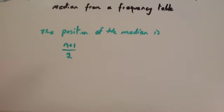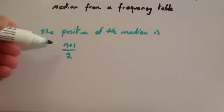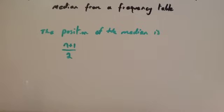Whenever you're finding the median from a frequency table that's not grouped, to find the position of the median, you use the formula n plus 1 over 2, where n is the number of values. Let's have a look at an example to see how to find the position of the median and then what the median would be.